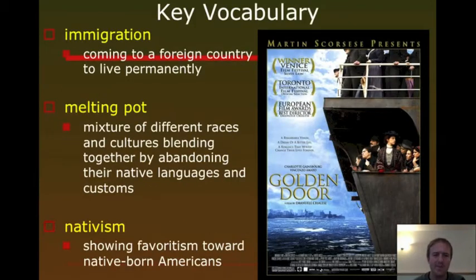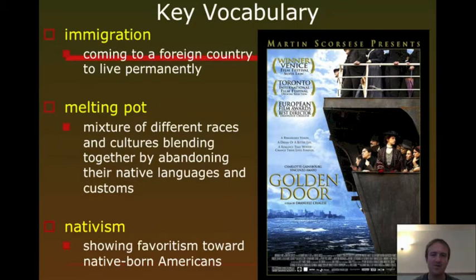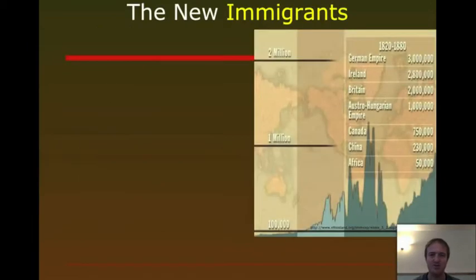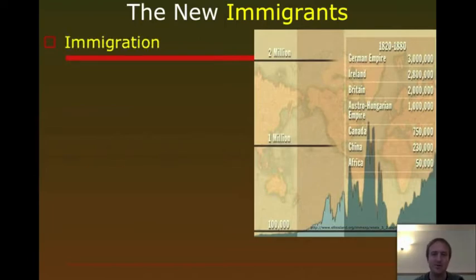Key vocab for today: I'll point out the melting pot — think to yourself if you've maybe heard that term before — and nativism. We're going to find out nativism is a backlash against this immigration that's happening. But let's get to the new immigrants right away.